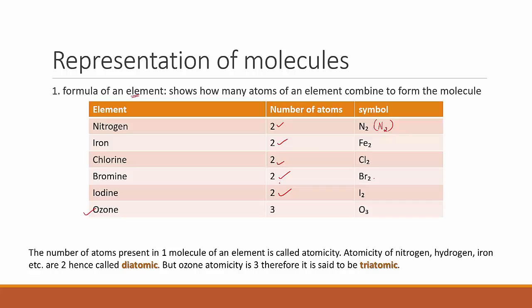Based on the number of atoms present in one molecule of an element, there is a concept called atomicity. Nitrogen, iron, chlorine, bromine, iodine, and hydrogen all need two atoms to form a molecule — these are called diatomic. Ozone needs three atoms of oxygen to form a molecule, so it is triatomic. When two atoms combine to form a molecule it is diatomic; when three combine it is triatomic.